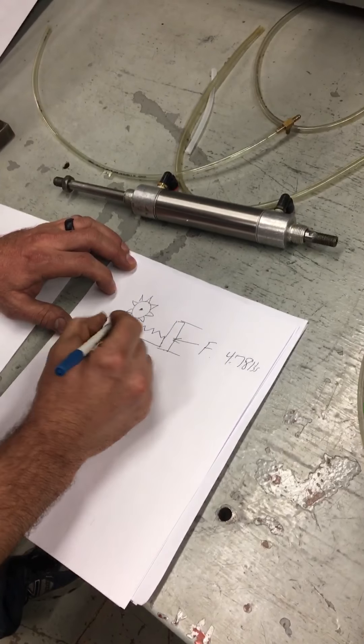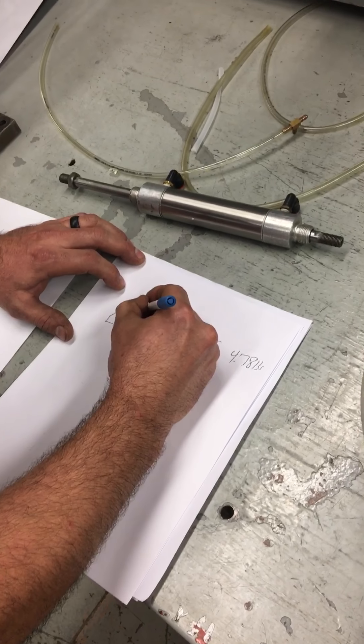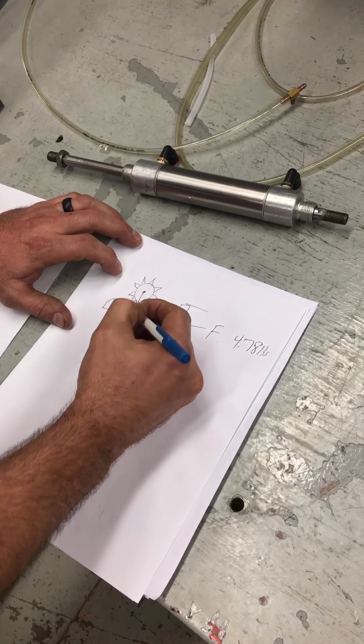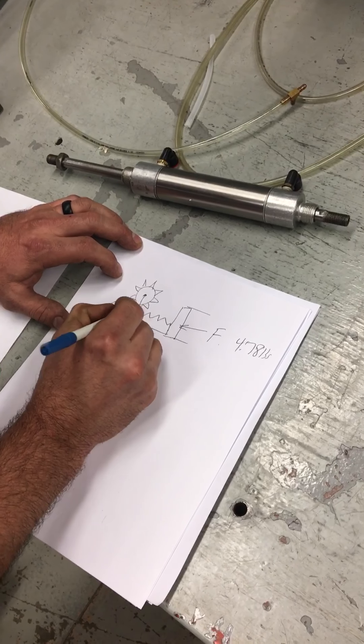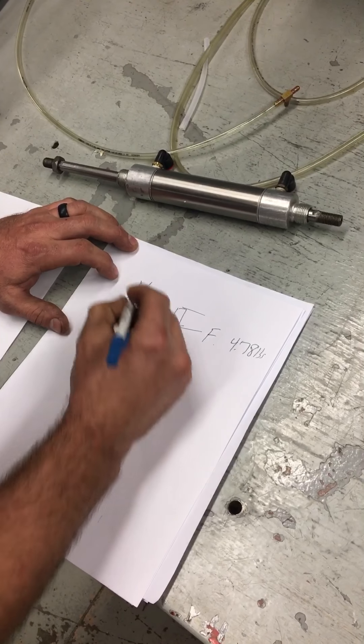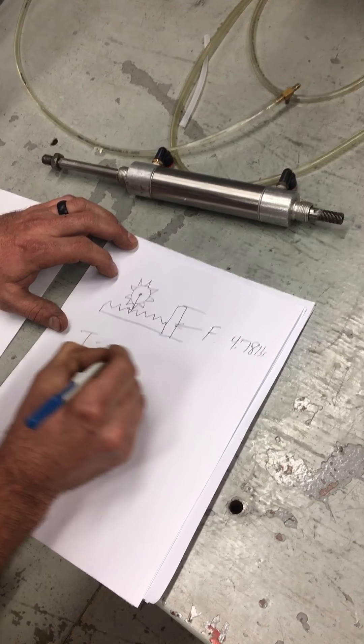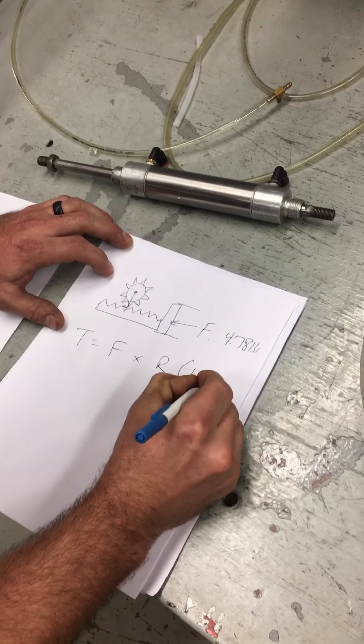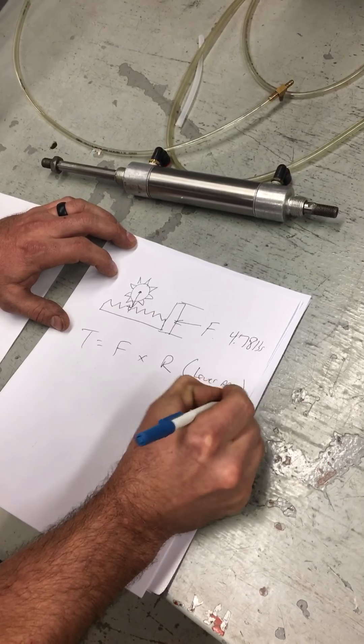So as this moves forward, it's going to hit this radius, or lever arm if you will, at a perpendicular angle and going to create a torque. Now in order to do that we need torque, as we said, equals force times the radius, or lever arm.